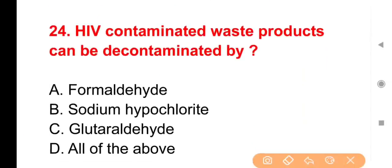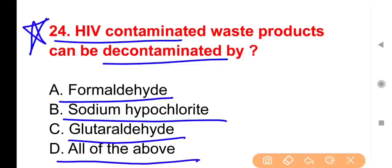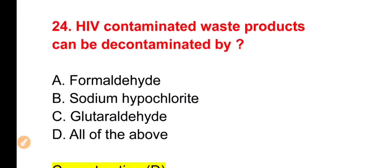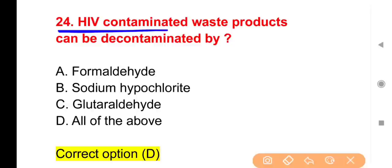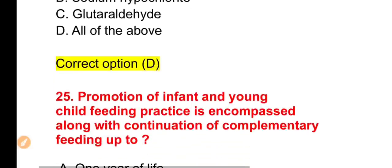Question 24: HIV-contaminated waste products can be decontaminated by — formaldehyde, sodium hypochlorite, glutaraldehyde, or all of the above. The right answer is Option D. HIV-contaminated articles can be decontaminated by formaldehyde, sodium hypochlorite/chlorite, and glutaraldehyde — all three.